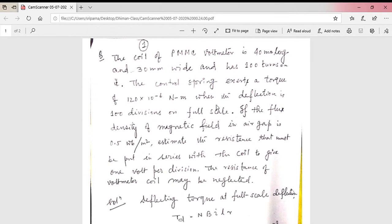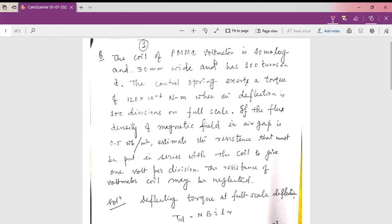Today we'll discuss a numerical related to the PMMC instrument, that is permanent magnet moving coil instrument. The numerical is: the coil of a PMMC voltmeter is 40 millimeter long and 30 millimeter wide and has hundred turns on it.